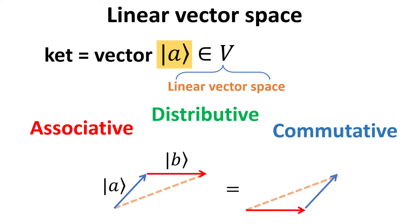Ket is a vector which lives in an n-dimensional complex vector space. Elements from this vector space V can be added together and multiplied with a scalar, but these operations satisfy certain rules which is the subject of this video.